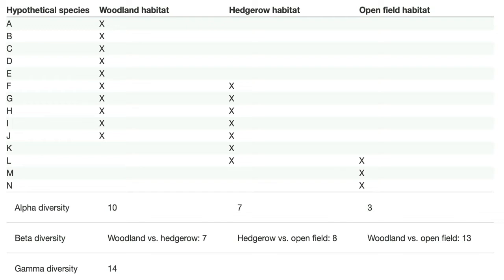There are four hypothetical regions: the woodland habitat, the hedgerow habitat, and the open field habitat. We have hypothetical species labeled A through N — around 14 species in total.